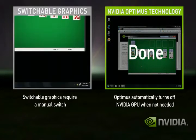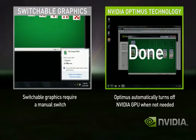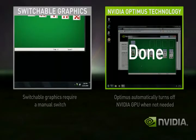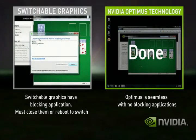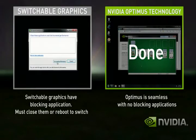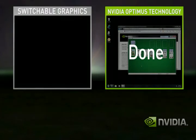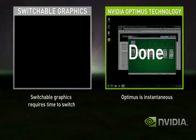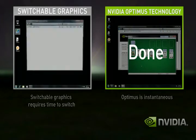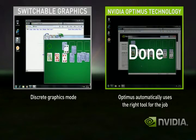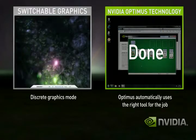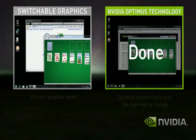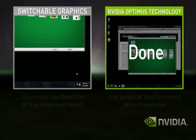With Switchable Graphics, you need to first switch modes to discrete. The problem is that you have blocking applications that need to be shut down before switching. So let's shut those down. Now you're ready to switch. Now that you're in discrete mode, your GPU is always on, whether you're using a basic application or not. Start the game — performance is great. Shut down the game, but you're still in high performance mode and your battery life suffers.